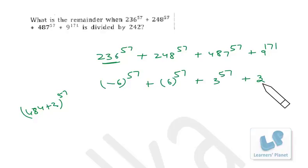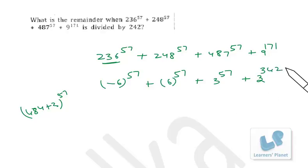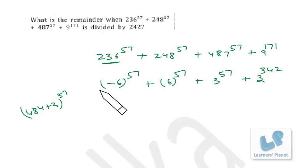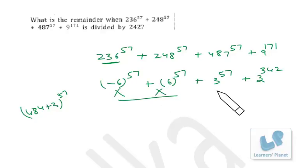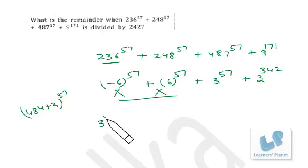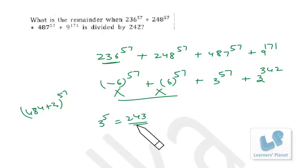We can convert to powers of 3. The remainder from 236^57 is -6^57 and from 248^57 is +6^57, so they cancel each other. We are left with 3^57 + 3^342.